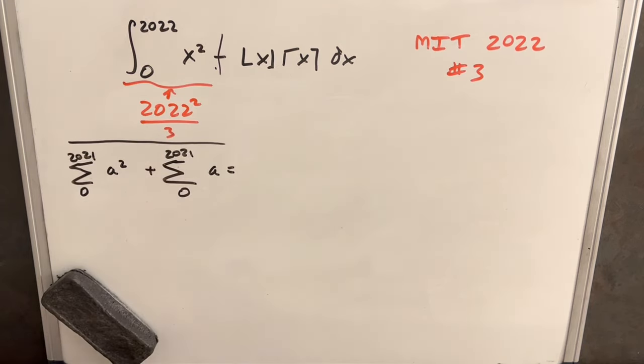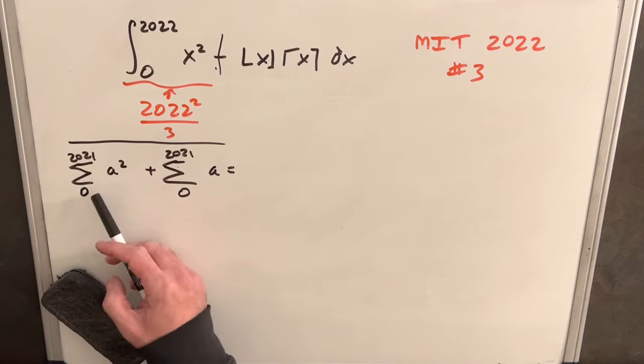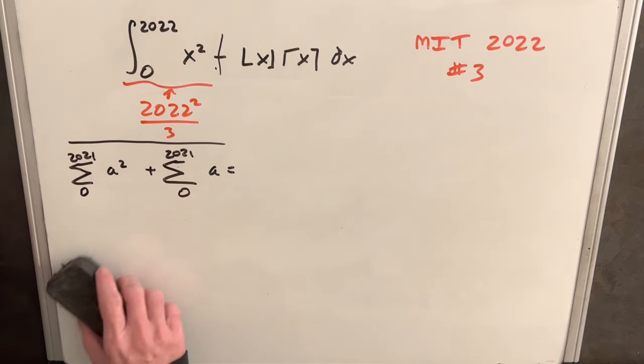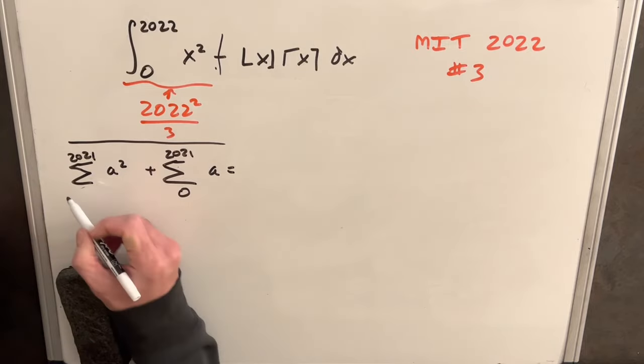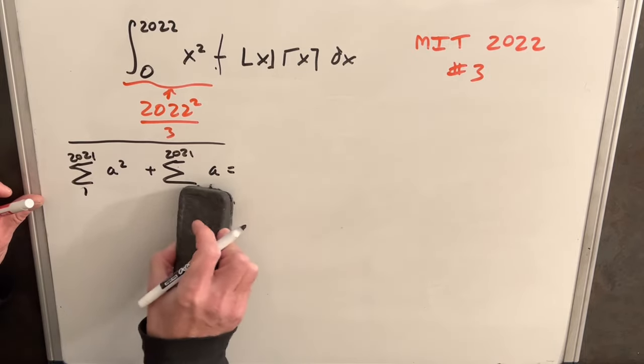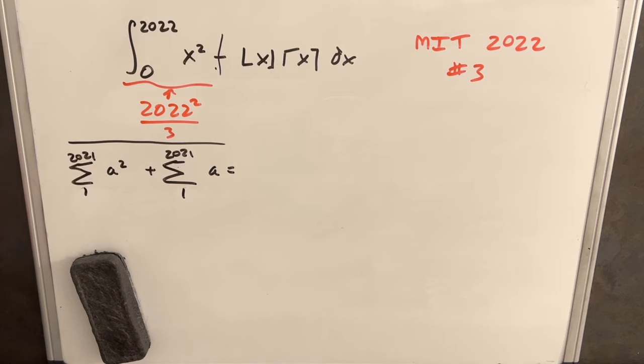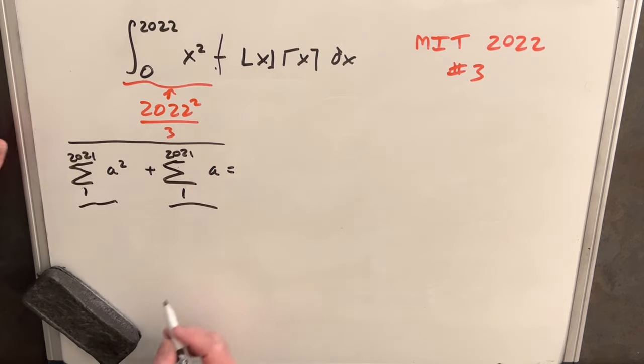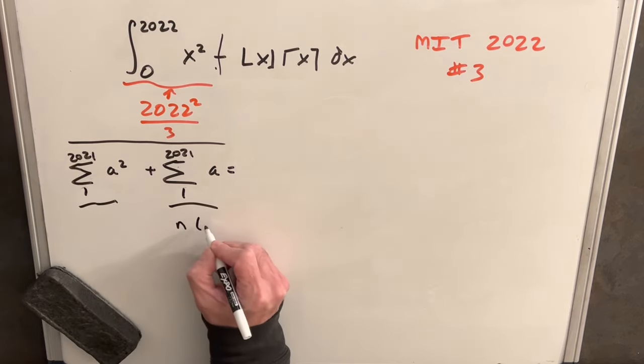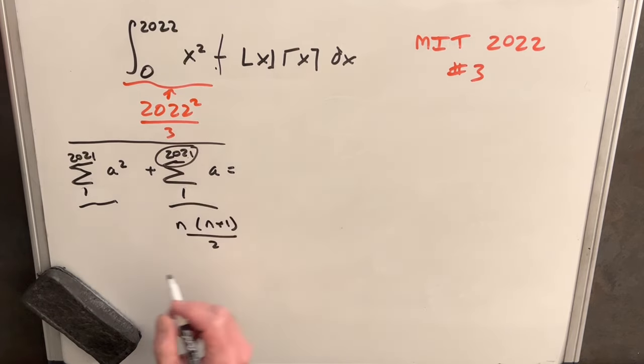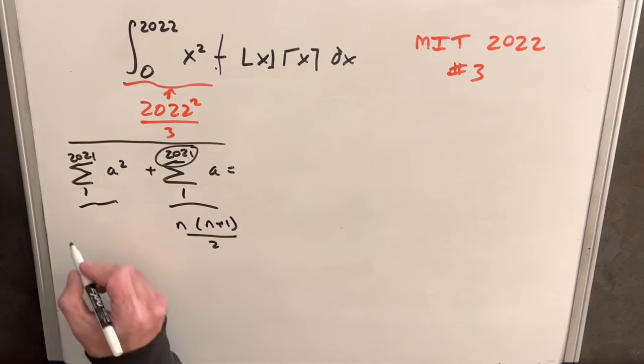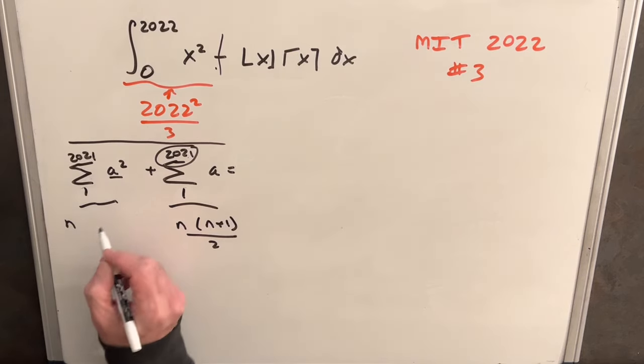Notice what we found previously, that our first term is actually 0. When we put 0 in for A squared, we have 0. So we can change this index to 1, and we can do the same thing here and change this index to 1. We have a formula for each of these things.